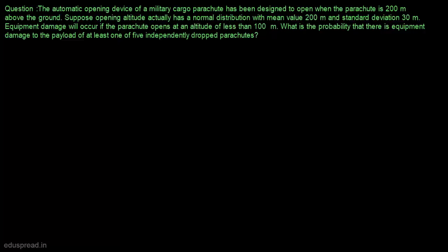In this video, I am going to solve this question. The automatic opening device of a military cargo parachute has been designed to open when the parachute is 200 meters above the ground. Suppose the opening altitude actually has a normal distribution with mean value 200 meters and standard deviation 30 meters. Equipment damage will occur if the parachute opens at an altitude of less than 100 meters. What is the probability that there is equipment damage to the payload of at least one of five independently dropped parachutes?